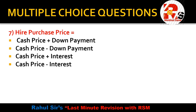Question seven is from the chapter of Hire Purchase. Hire purchase price equals: cash price plus down payment, cash price minus down payment, cash price plus interest, or cash price minus interest. The basics must be clear — to find hire purchase price, we add the interest to the cash price value. So hire purchase price equals cash price plus interest.